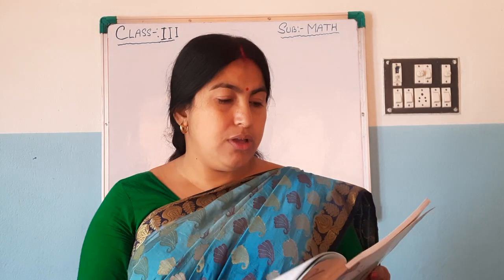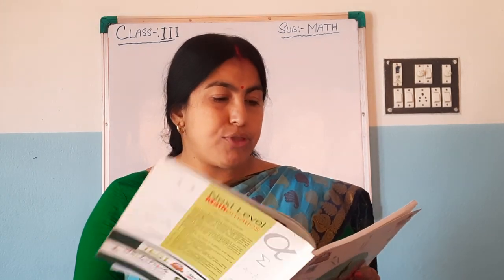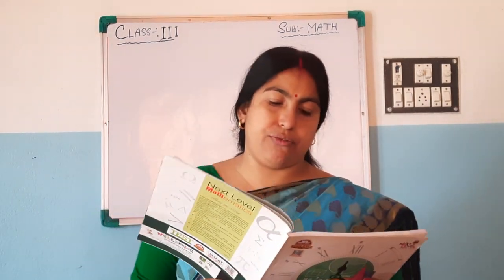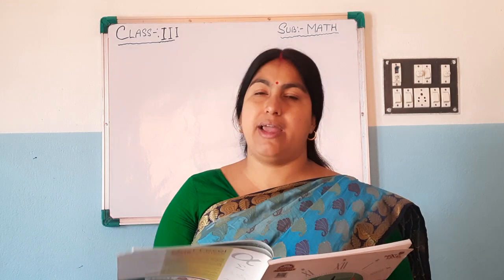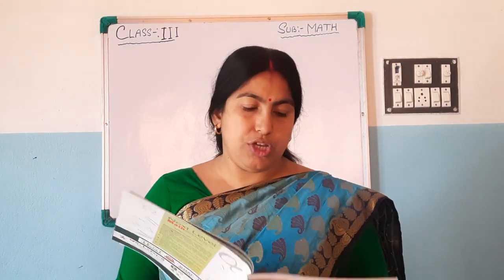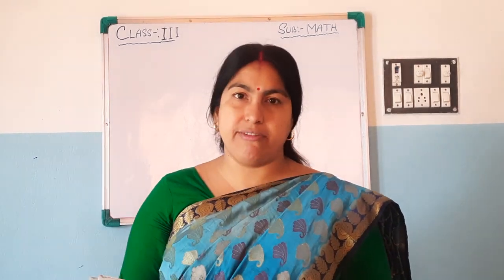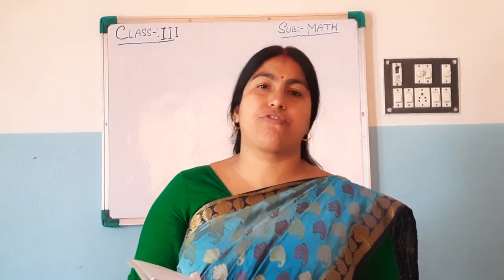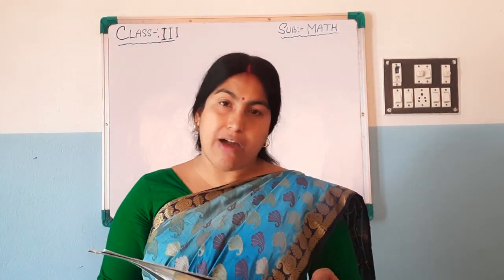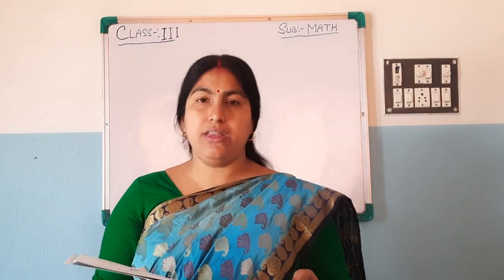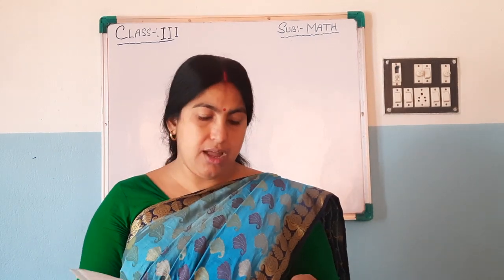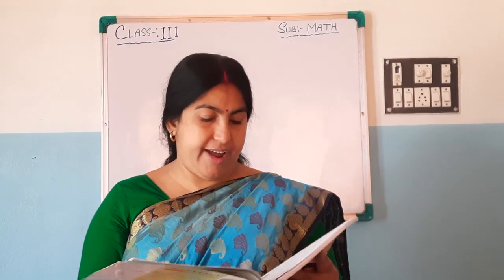Now, put the hour hand on each clock to show the correct time — you have to draw the hour hand, as the minute hand is already drawn. Using the time given, draw the hour hand. Next, the hour hand is given and you have to draw the minute hand using the time provided.